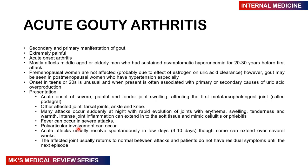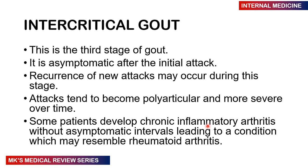An acute attack usually resolves within a few days (3 to 10 days) or can extend several weeks, and the affected joint usually returns to normal between attacks with no residual symptoms. In the intercritical stage, after the initial attack the patient becomes asymptomatic. Recurrent attacks during this stage tend to become polyarticular and more severe over time. Some patients can develop chronic inflammation without asymptomatic intervals, leading to a condition resembling rheumatoid arthritis.